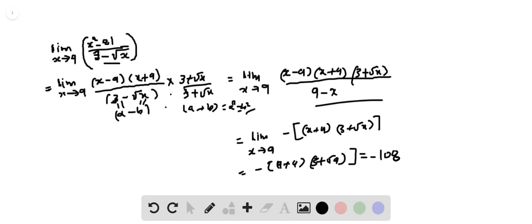So the limit as x approaches 9 of the function x squared minus 81 by 3 minus under root x equals minus 108. Thank you.